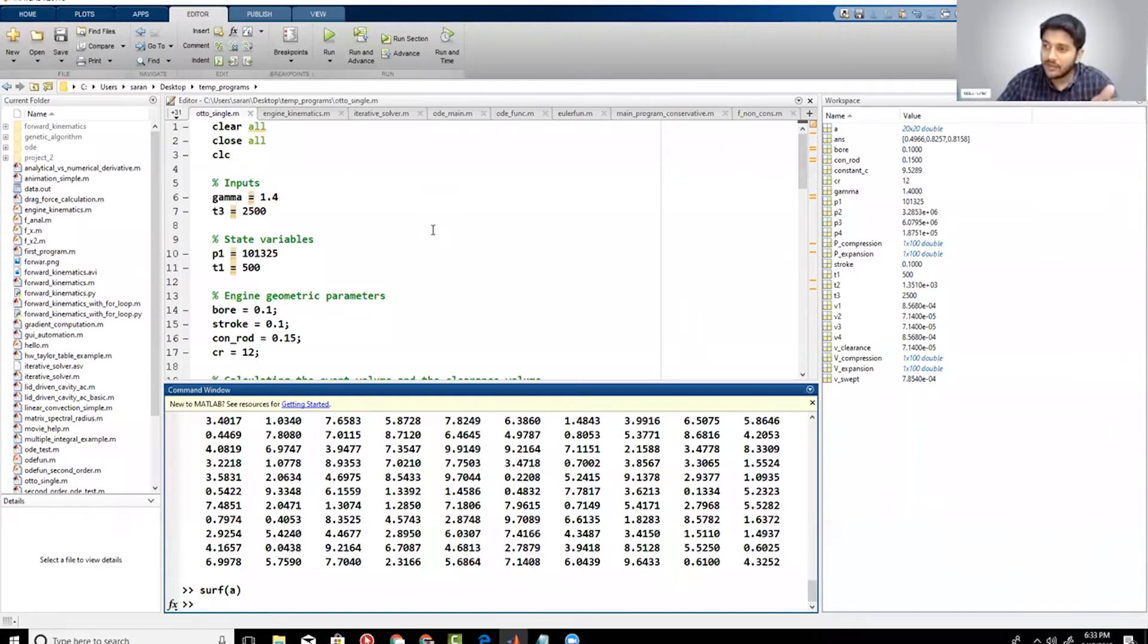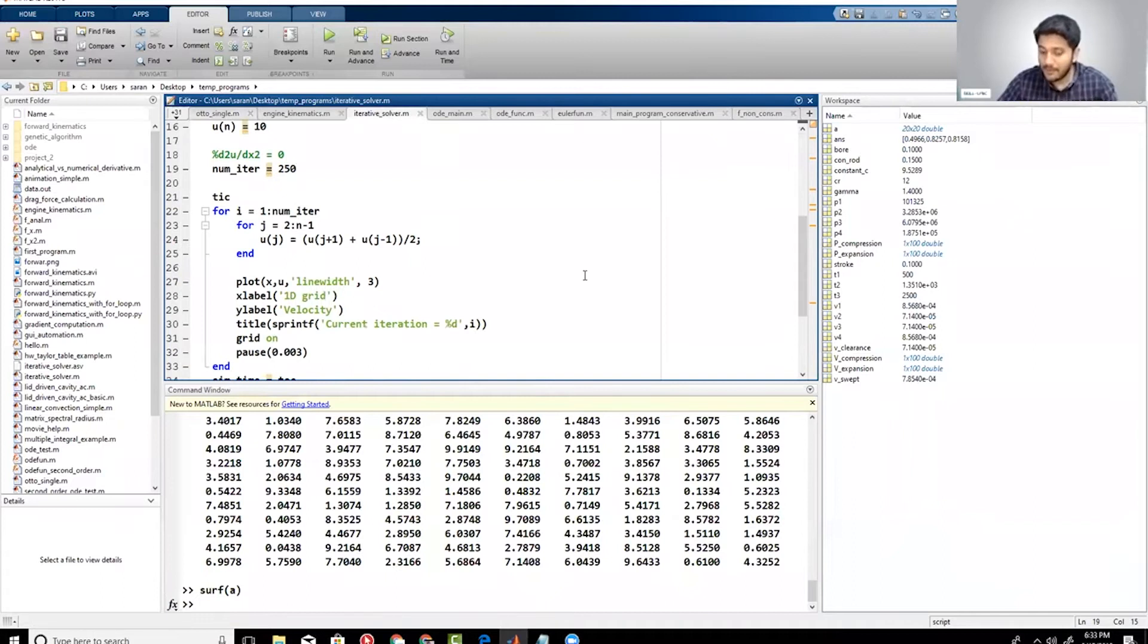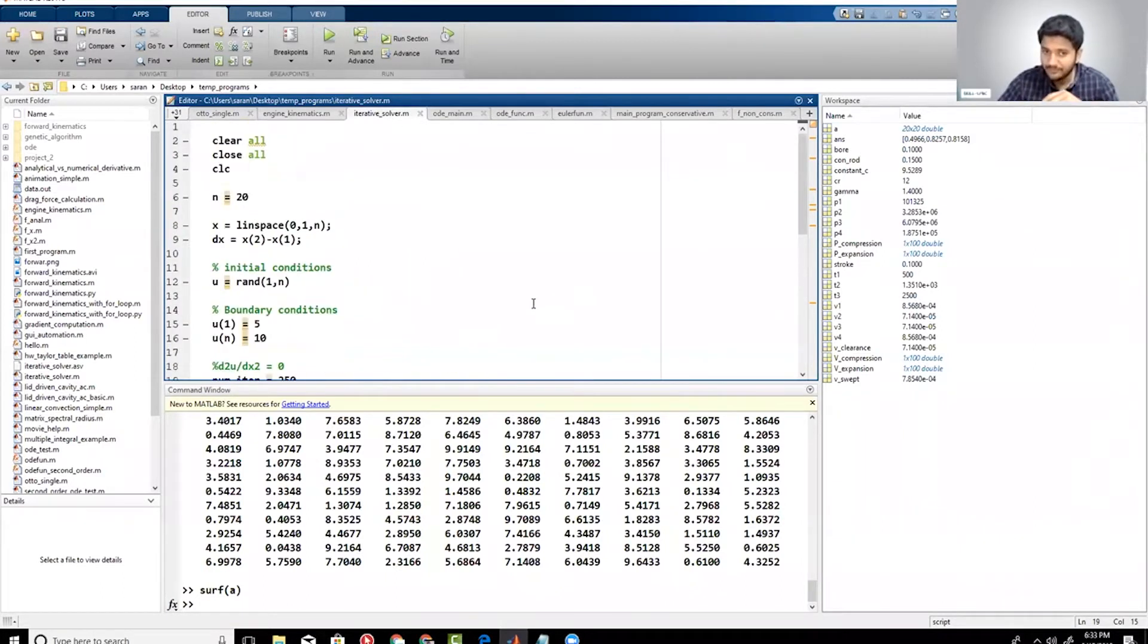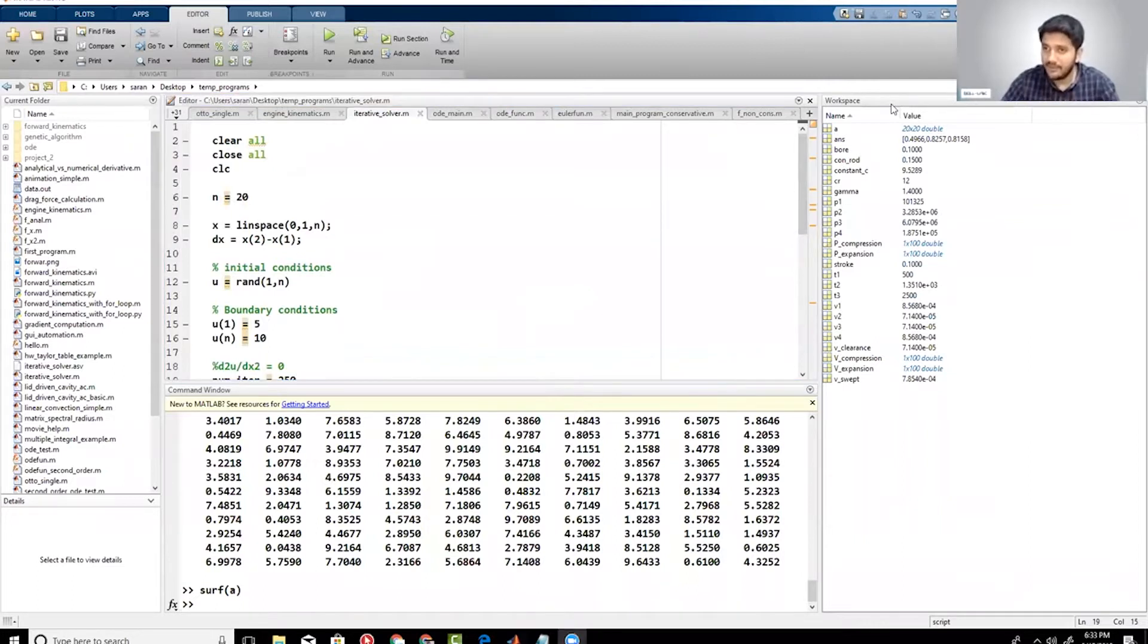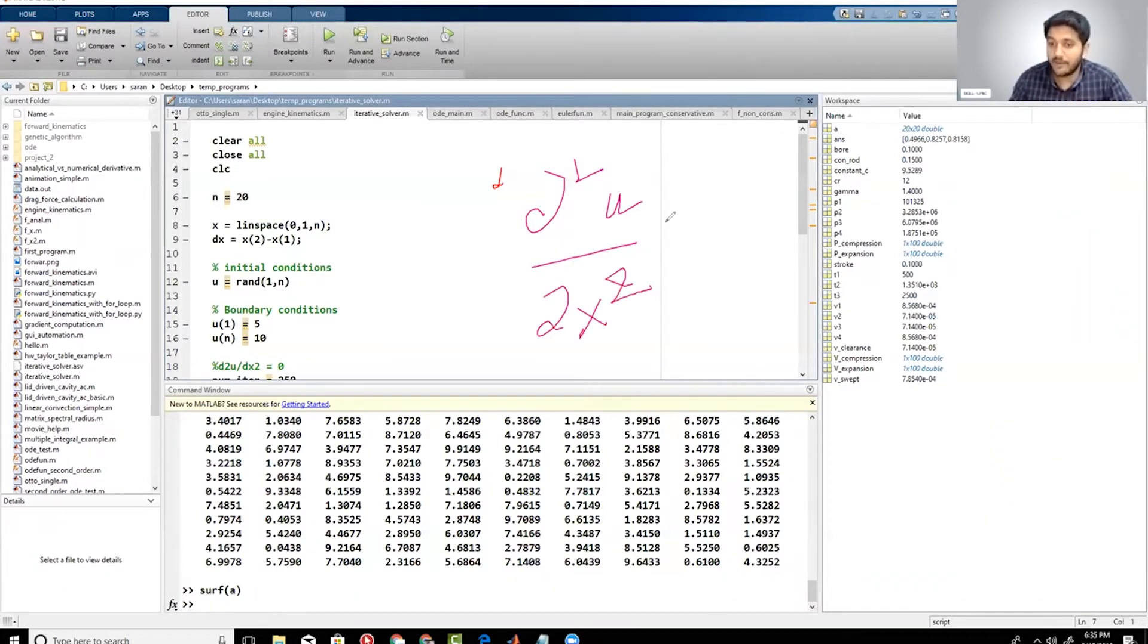You can see that building a simple autocycle simulator is fairly straightforward. We've done that. The next type of problem is basically math problems. What we're trying to solve here is a simple elliptic partial differential equation. The PDE I'm going to solve is d²u/dx² = 0.